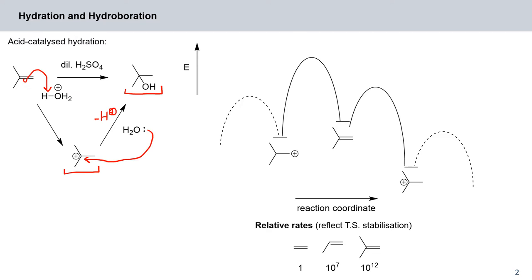This reaction is said to be regioselective because you are essentially selecting for a more stable carbocation, because there are two ways how you can protonate such an alkene. So let's have a look at the energy profile of such a reaction. You would start out with your alkene here in the center, and now there are two ways how you can protonate this double bond. One of the possible transition states would be for your proton to be added to the central carbon, so you would build up a partial positive charge there.